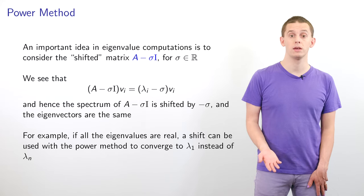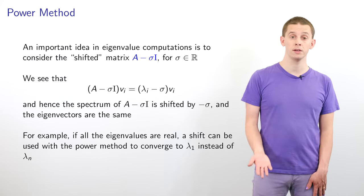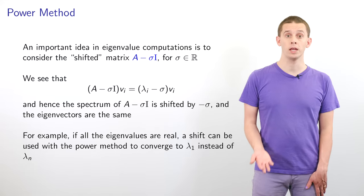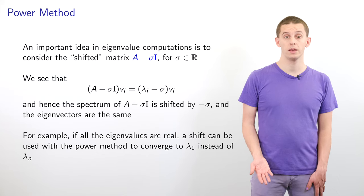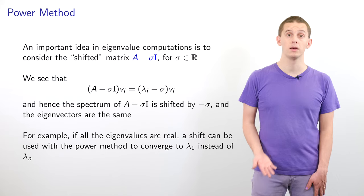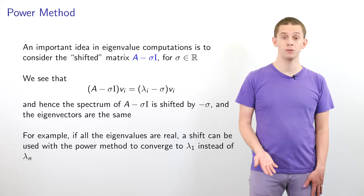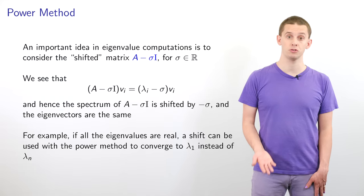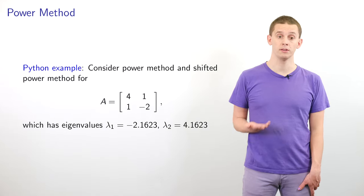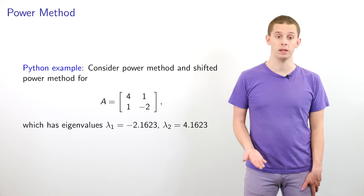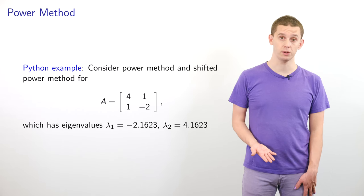An important idea in eigenvalue computations is to consider the shifted matrix A minus sigma*I for some real sigma. If lambda_i and v_i are an eigenpair for A, then (A - sigma*I) v_i = (lambda_i - sigma) v_i. The spectrum of A - sigma*I is shifted by -sigma and all eigenvectors remain the same. If all eigenvalues are real, a shift can be used with the power method to converge to the smallest eigenvalue. We'll now look at an example using a 2x2 matrix A with entries [4, 1; 1, -2] and show that using shifts we can extract both eigenvalues.